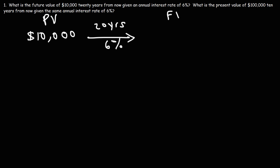So we're looking for the future value. The formula that we could use to calculate the future value from the present value is this formula. FV is equal to PV times 1 plus r raised to the n.